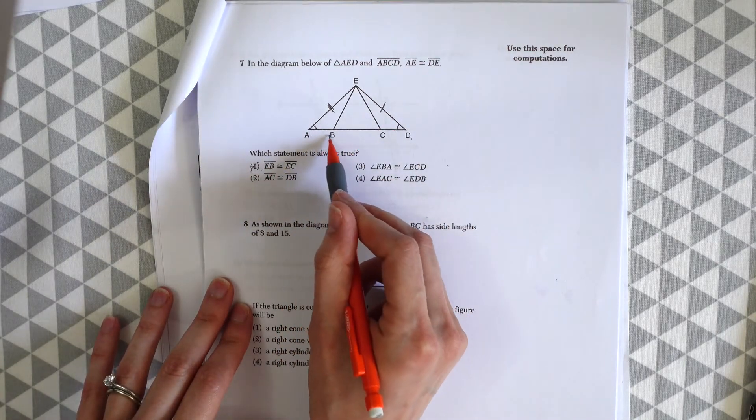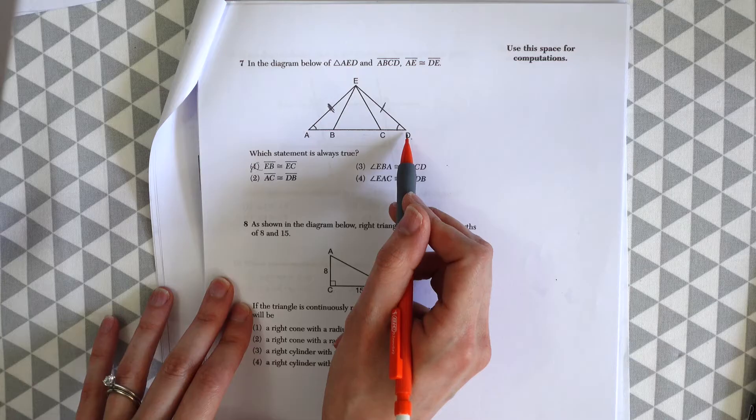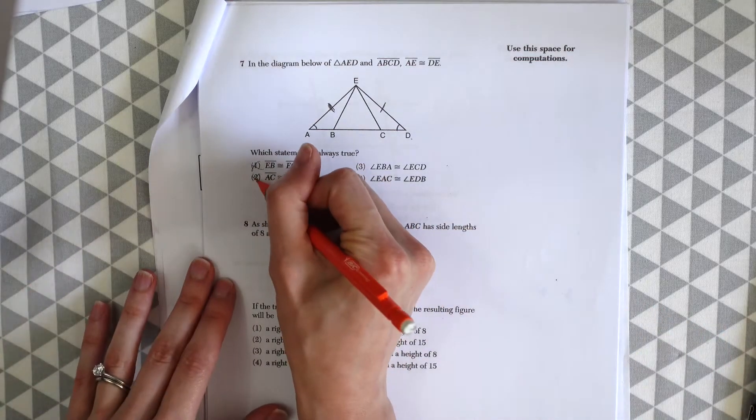AC, so this over here, is congruent to DB. So again that looks true, but there's nothing to tell us that it definitely is true. So that's not the right answer.